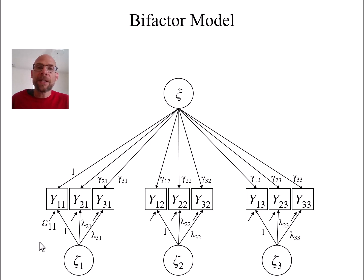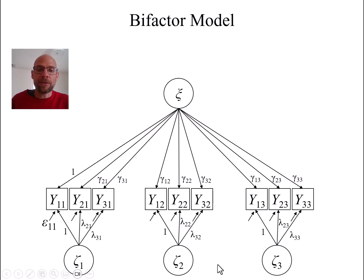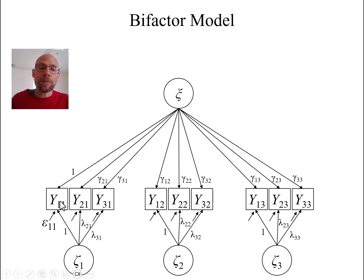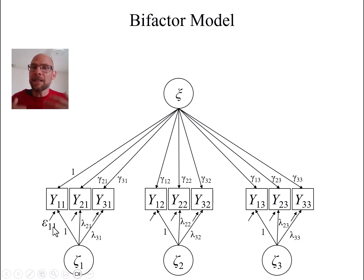A bifactor model consists of a general factor, specific factors, and measurement error variables, and it allows us to partition the observed variance into general variance components, specific variance components, and error variance components. This is because the latent variables and error variables in this model are uncorrelated — there are no arrows between the general factor xi and the specific factors zeta, and no correlations are allowed between the zeta factors.